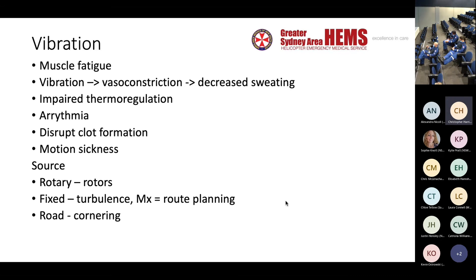This is particularly relevant in very hot climates like we sometimes see in Australia — you need to bear in mind that the team will fatigue more easily. Vibration can also cause arrhythmias, disrupt clot formation, and lower frequencies can cause motion sickness — so if you've got a patient prone to that, you'd give a prophylactic antiemetic. In a rotary wing aircraft the rotors themselves are the source of vibration, whereas in a fixed wing aircraft it's atmospheric turbulence — which can be managed with route planning.